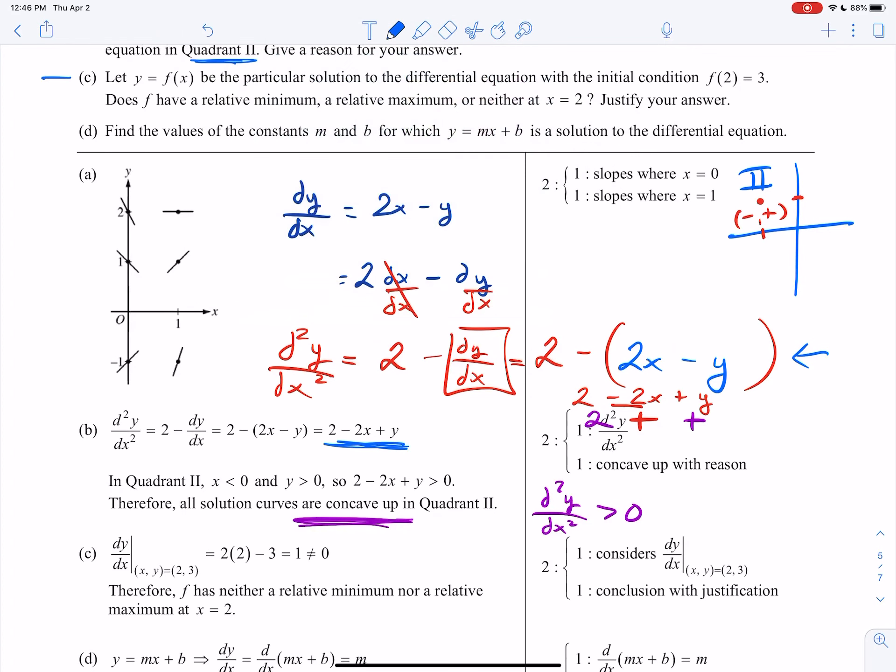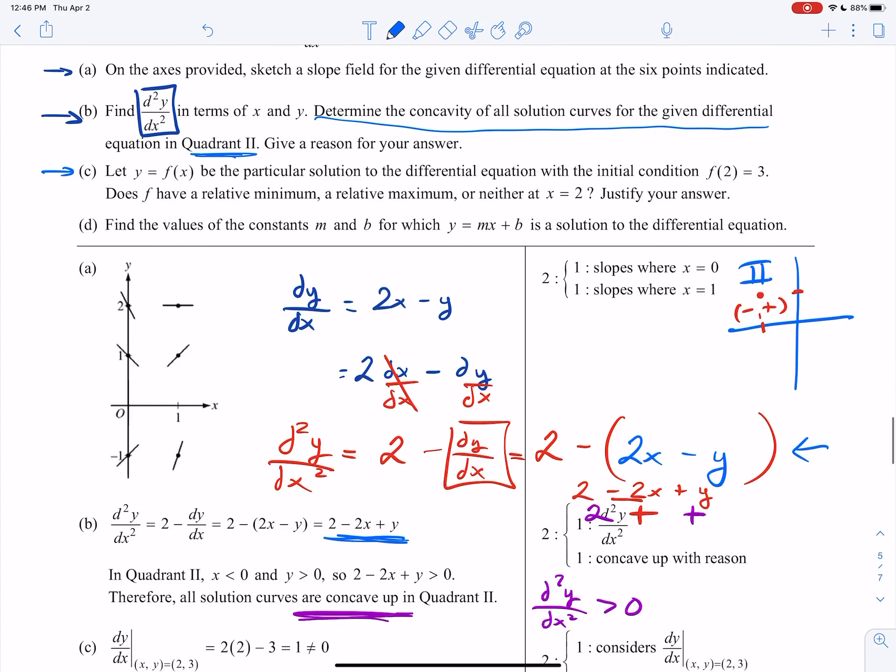Here's part C. Let f be the particular solution to the differential equation, with the initial condition f(2) equals 3. They want to know if f has a local min, local max, or neither. So this one, not too popular with A, B, it does pop up a lot at B, C, but this is where you would use the second derivative test. We didn't use it too often because it's really a very specific case, depending on what you don't have here. So here's what you want to do.